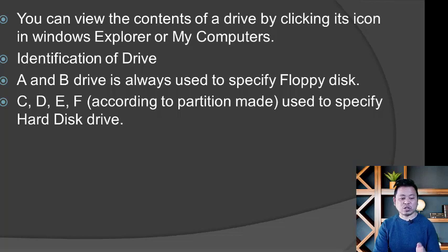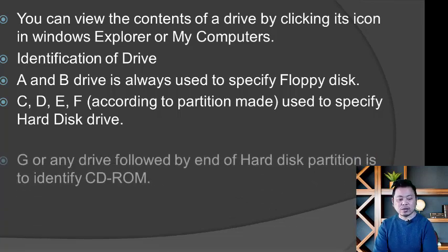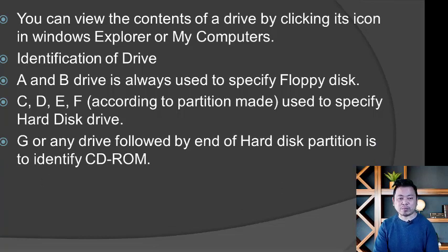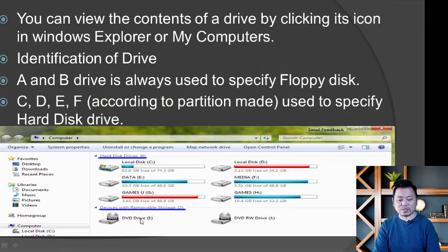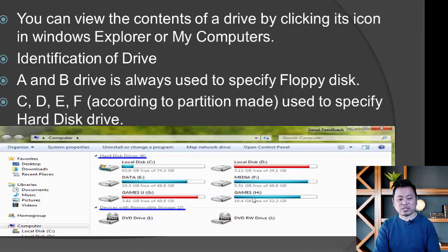C, D, E, and F drives are used for the hard disk. The G drive on a laptop or PC placed on the desktop is typically for a CD-ROM or removable drive. You can bring data to the CD. When you open the D drive, you access hard disk data, and the G drive may be a pen drive.